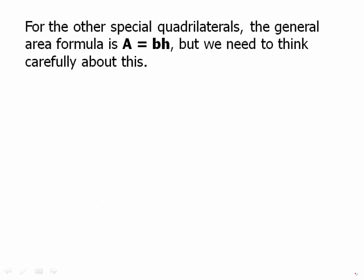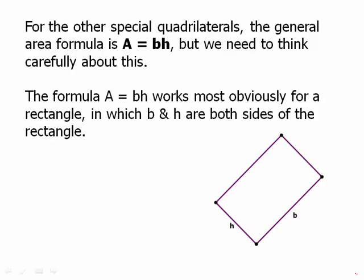For the other special quadrilaterals, the general formula is area equals base times height, but we need to think carefully about this. The formula area equals base times height most obviously works for a rectangle in which b and h are sides of the rectangle.